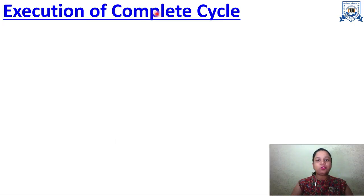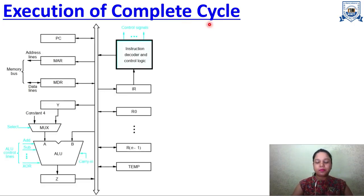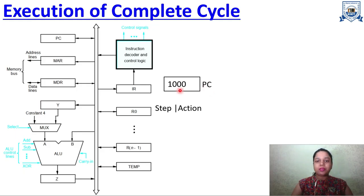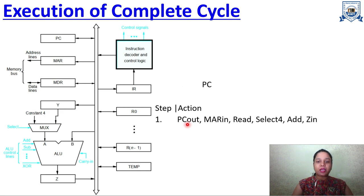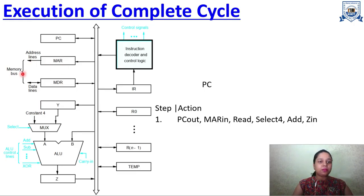Now let's see the execution of the complete cycle with a diagram and control sequence. The program counter register will be holding some address, say 1000, and at that address is the instruction to be executed. First: PC out — the address in PC is placed on the bus. MAR in — that address, 1000, goes to MAR. With the help of address lines and the memory bus, the content at that address is read and given to MDR.